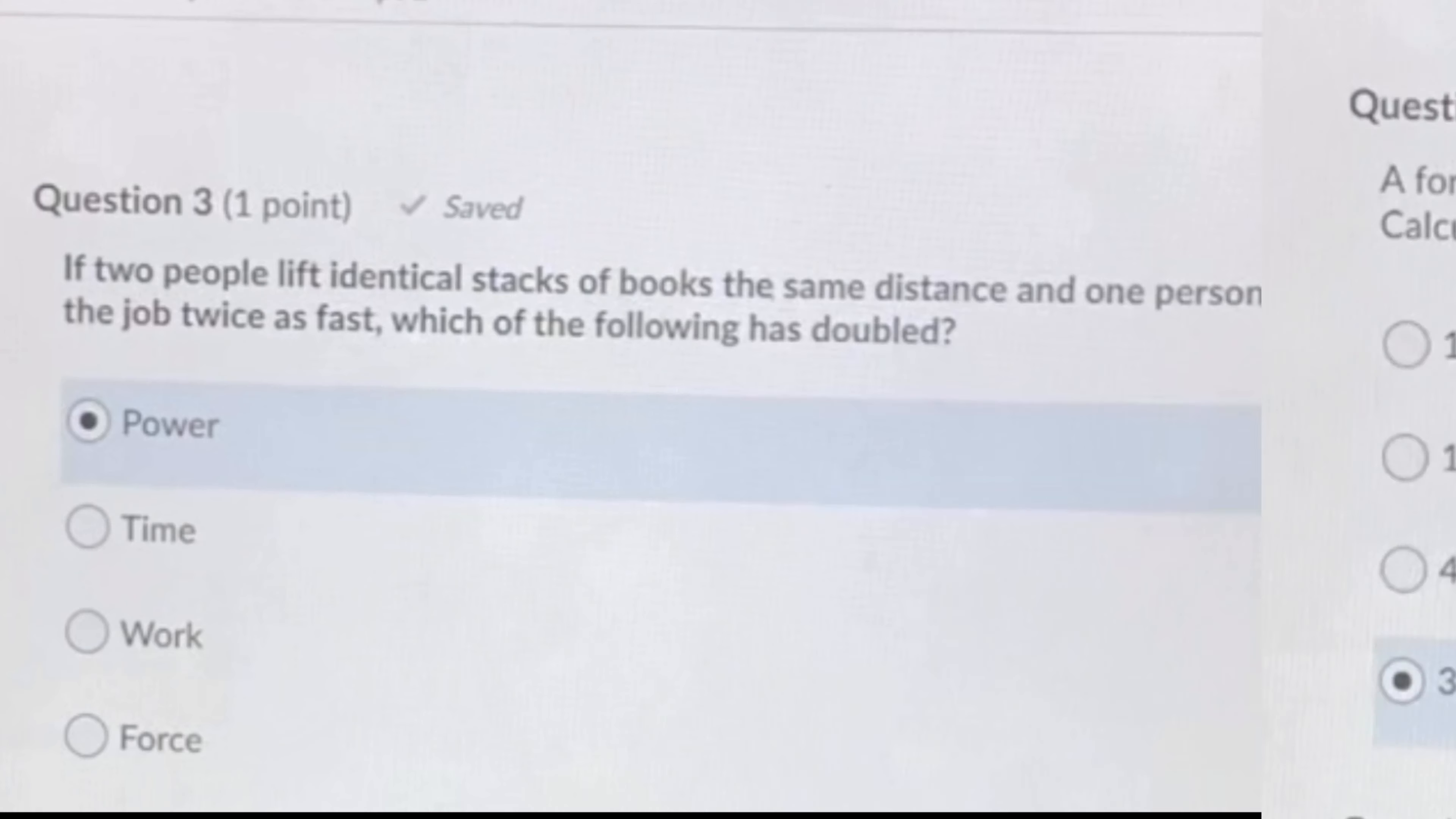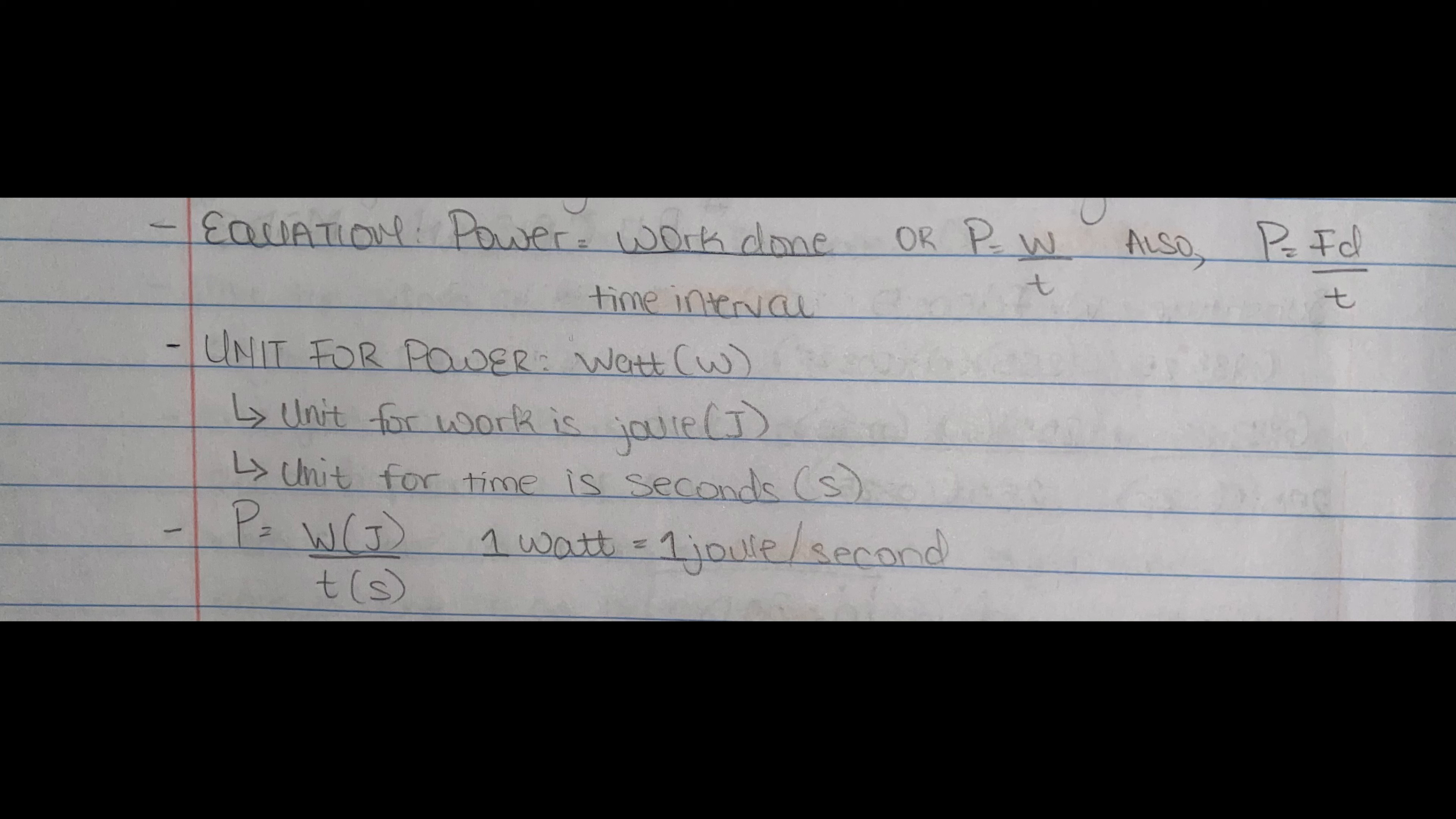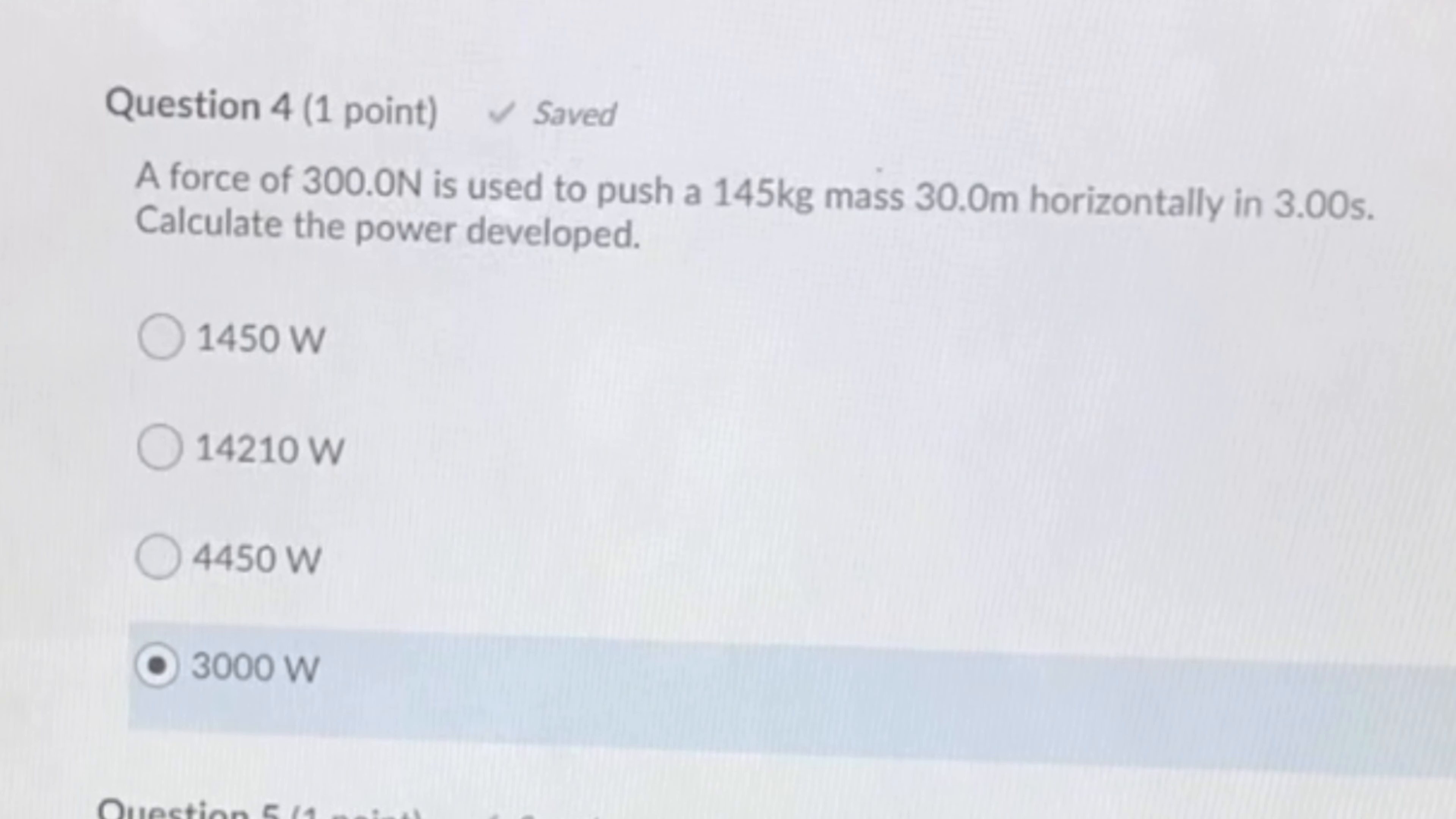A force of 300 newtons used to push a 145 kilogram mass 30 meters horizontally in 3 seconds. Calculate the power developed. The formula for power is work over time, and work is force times distance. So it's force times distance over time. We have the force, the distance as 30 meters, and the time as 3 seconds. The mass that he gave you in this problem was completely irrelevant. So if we did 300 times 30 divided by 3 seconds, you get 3000, and that's 3000 watts.